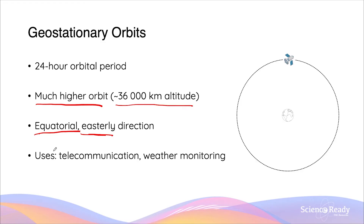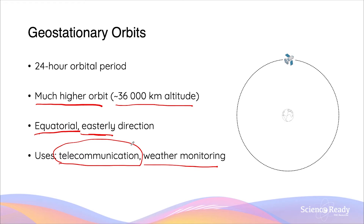Two typical uses of geostationary satellites include telecommunication — to receive and send radio signals for communication purposes — and also weather monitoring. These two applications rely on the key advantage of geostationary orbits: one particular satellite will always appear to be stationary relative to a point on the Earth, so the distance between the satellite and a location on Earth remains constant throughout its orbit.